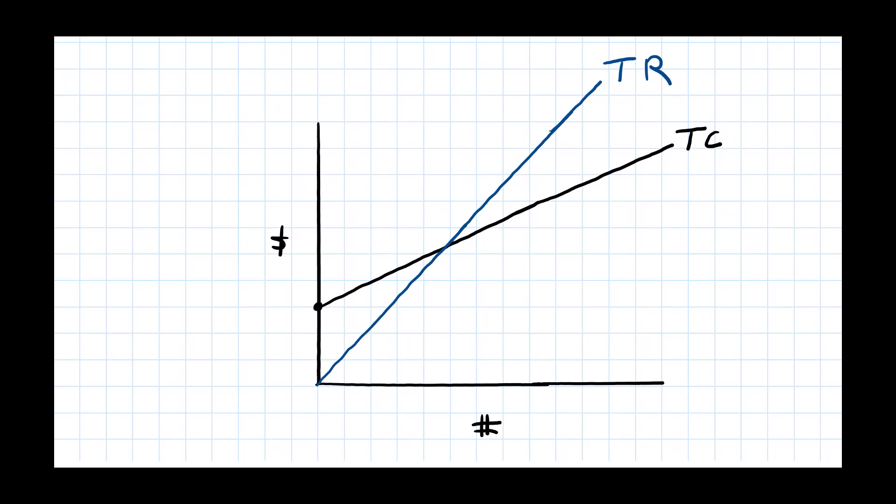With the break-even chart we can now understand the concepts of break-even point and margin of safety more easily. Here in this area of the graph we see that our total costs are exceeding the total revenue at a point. So we're making a loss there because our revenue has not covered our costs.